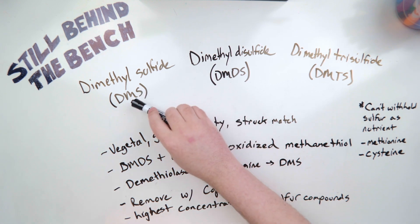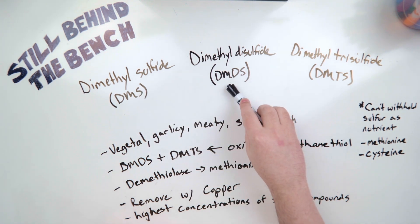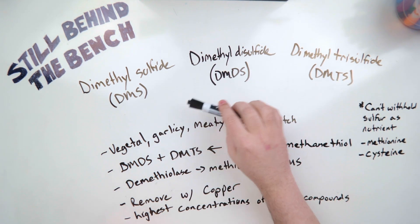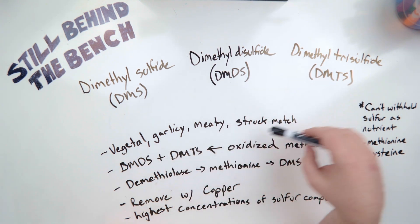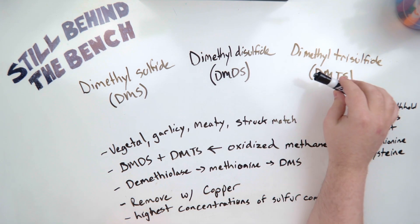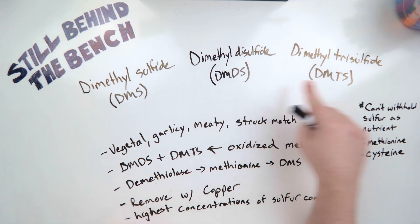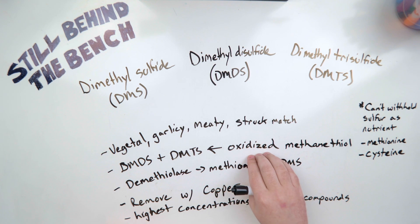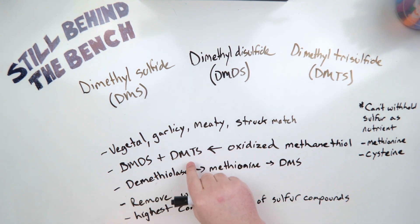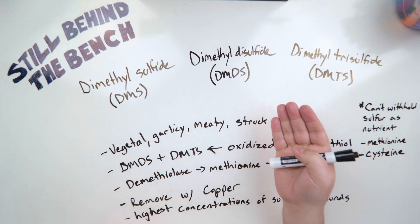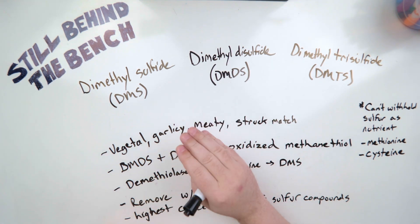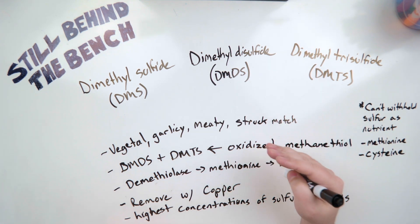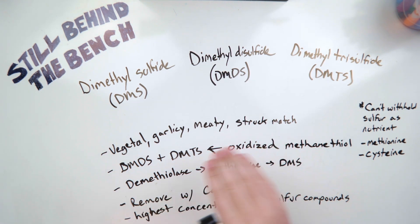The last three compounds I'm going to talk about are dimethyl sulfide, known as DMS; dimethyl disulfide, known as DMDS; and dimethyl trisulfide, known as DMTS. These are probably the most well-known sulfurous flavor compounds that can end up in your spirits, giving you off flavors that are vegetal, garlicky, meaty, and in the case of DMTS, struck match. All three are produced at the beginning of fermentation. DMDS and DMTS come about as a result of the oxidation of the previously produced methanethiol — methanethiol is oxidized into DMDS, and then DMDS is oxidized into DMTS. This can only happen when oxygen is present, so it happens at the beginning of your fermentation. As these compounds are being oxidized and helping use up oxygen along with the growing cells, that dropping oxygen level is going to protect the enzyme demethylase, which is inactivated or limited by the presence of oxygen.